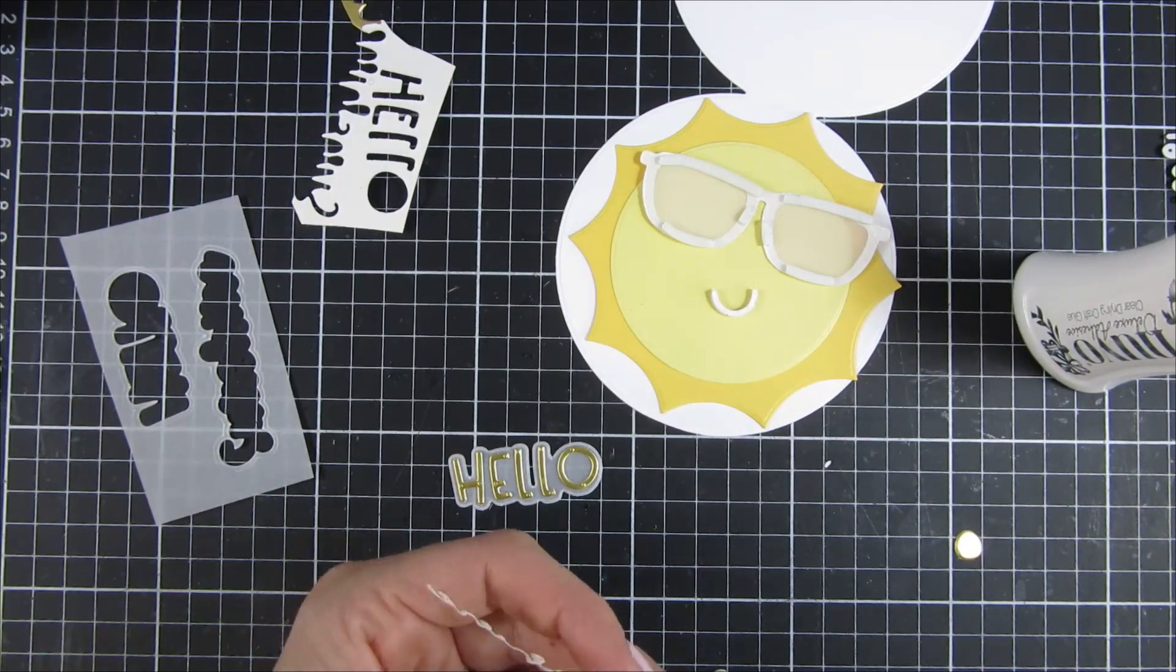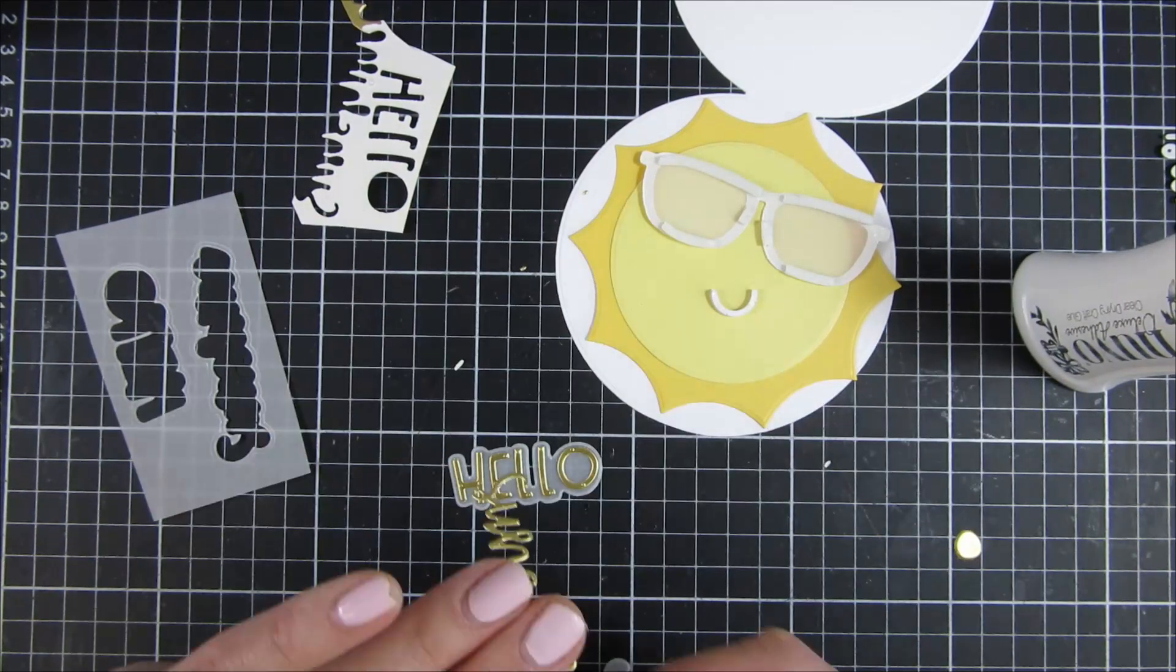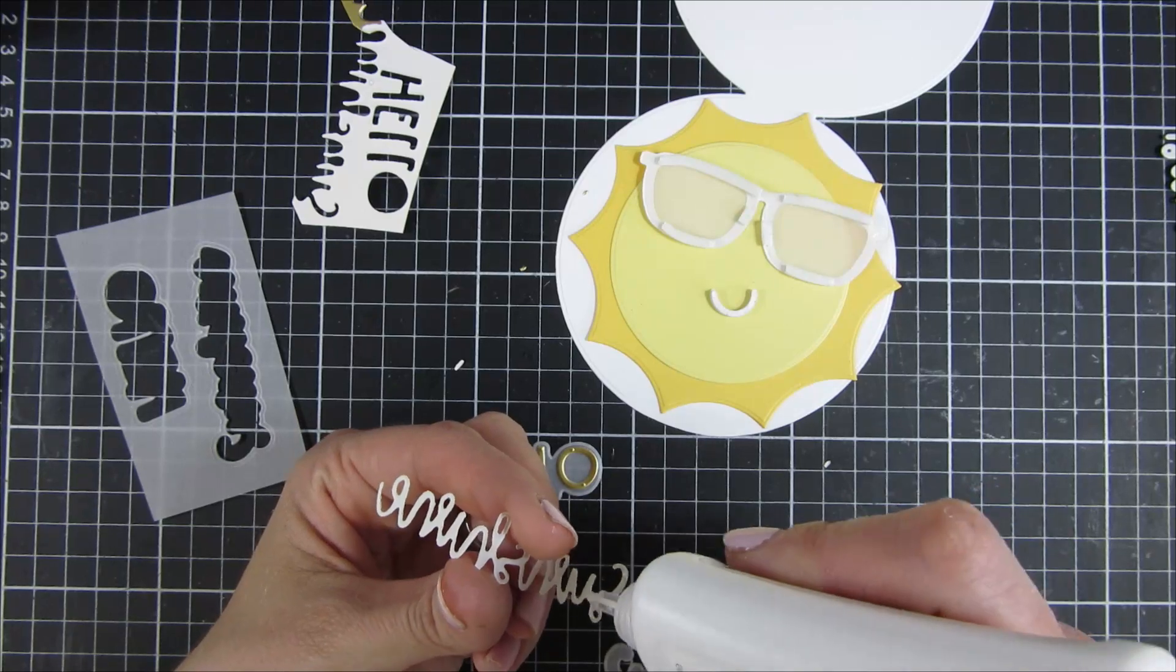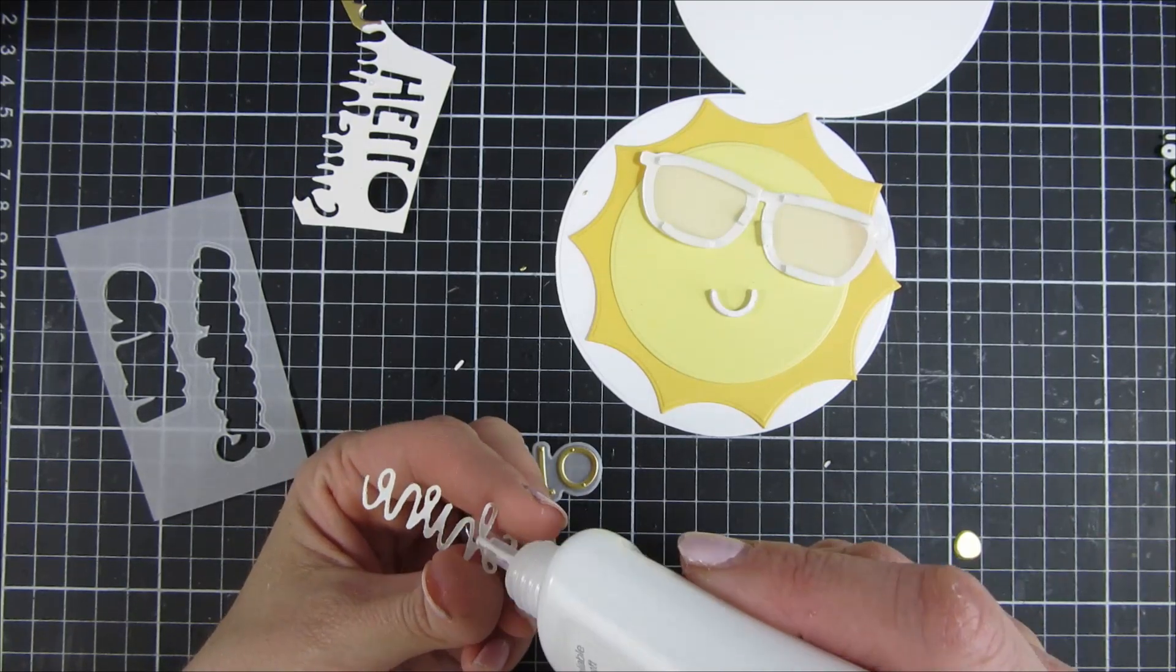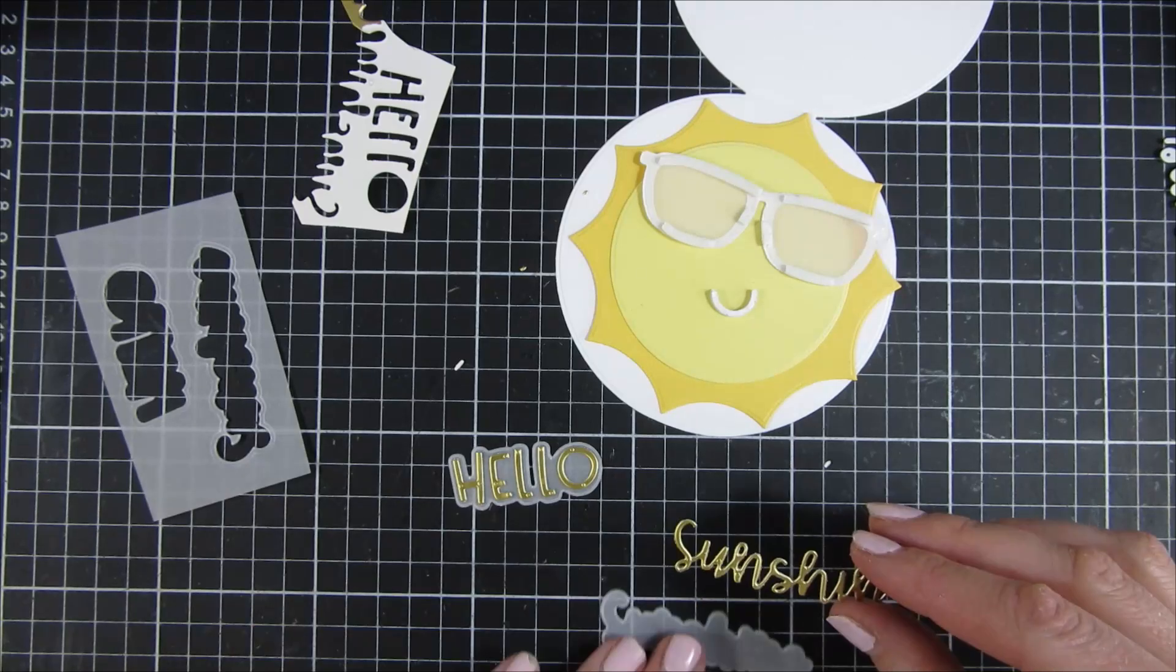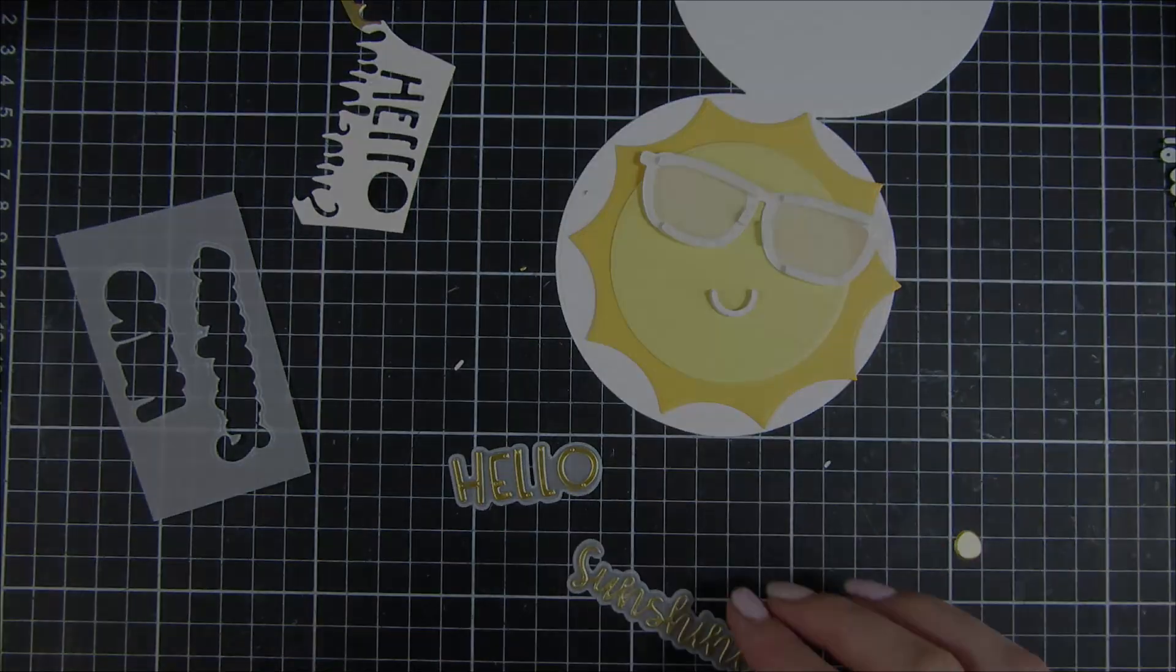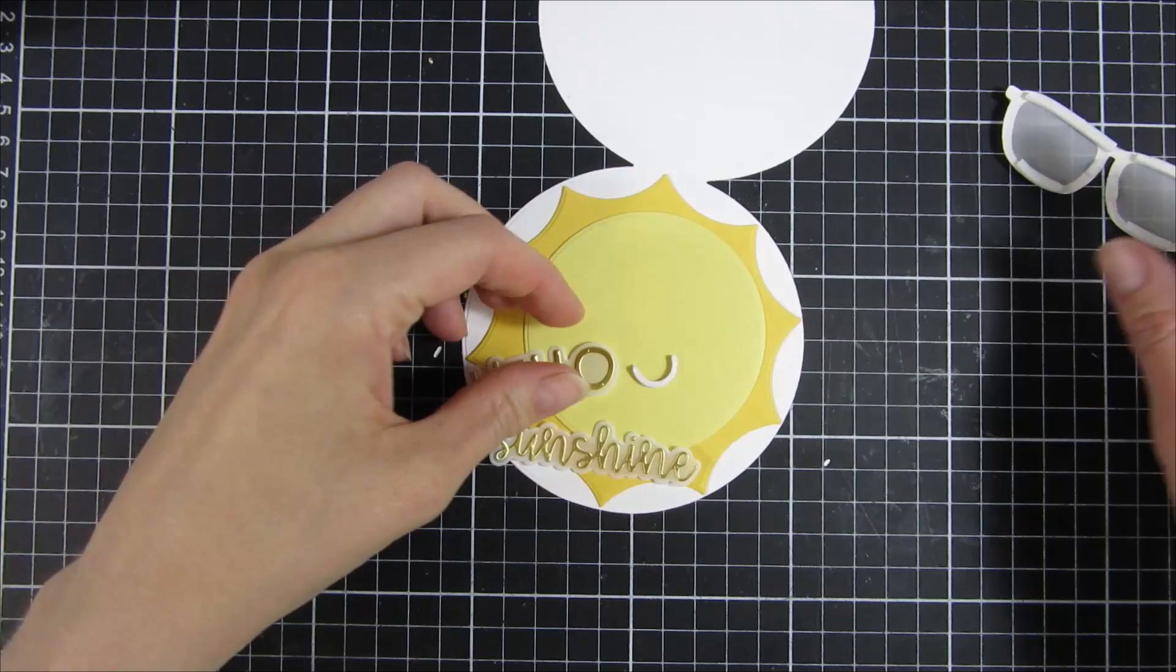It also comes with shadow pieces that you can see here on screen. I'm just poking out all of those inside parts, and then I can adhere it on top of my vellum. You can see it here on screen, and then we are ready to start assembling our first card.